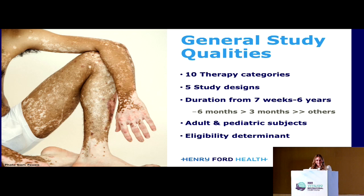We found many different types of studies. Therapy categories ranged from systemic orals, topicals, phototherapy, alternative medicine, and surgery. There were many study designs including RCTs, retrospective studies, case series, and case reports. Both adults and pediatrics were included as subjects, but it is important to note that VASI has only been validated in adults and not yet in pediatrics. We also found that it has been used as a threshold for inclusion and exclusion criteria in studies.